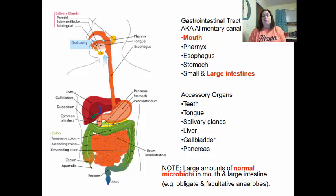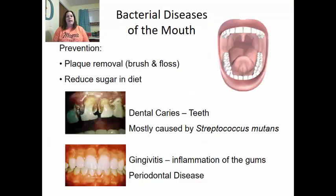Many of these normal flora are obligate or facultative anaerobic bacteria. Starting at the top with the entrance into the digestive system, these are bacterial diseases of the mouth. Everybody has bacteria in their mouth, and the goal is to prevent or lower the number of bacteria located there. The main way to do this is through plaque removal.